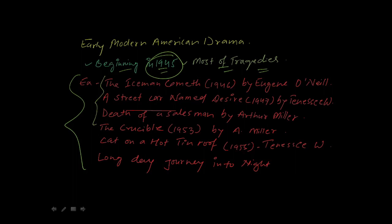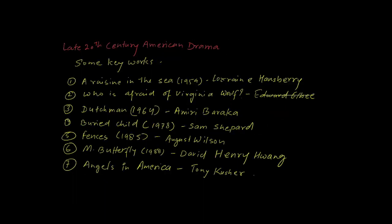These works are discussed in detail in our video course. The Crucible (1953) by Arthur Miller, Cat on a Hot Tin Roof (1955) by Tennessee Williams, and Long Day's Journey into Night are also key early modern works you should note down and study.